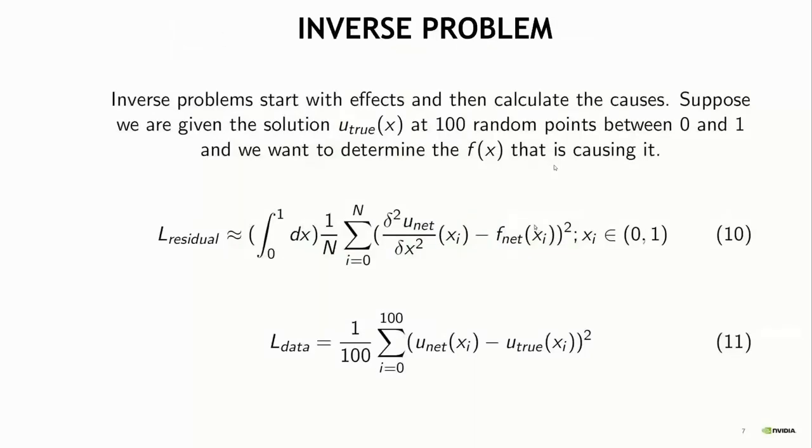This opens up a few different interesting opportunities. Going back to the Poisson equation problem, we can also solve inverse problems. Let's say we have the solution U true. This is the true solution at 100 random points, but we don't know what the forcing function is that is driving the solution. We can then construct a network that outputs the solution U and the forcing function F, and we create the residual governing equation losses just as I described earlier. But then we also add another data loss where you're essentially enforcing that the neural network solution has to be equal to the true solution at those sample points.